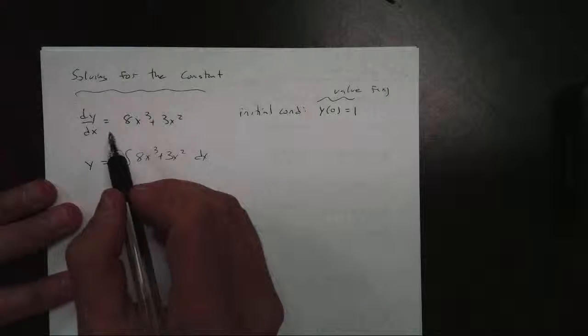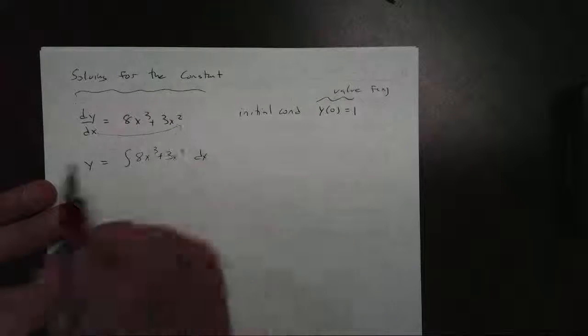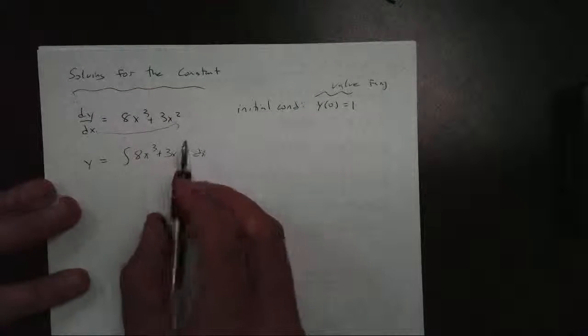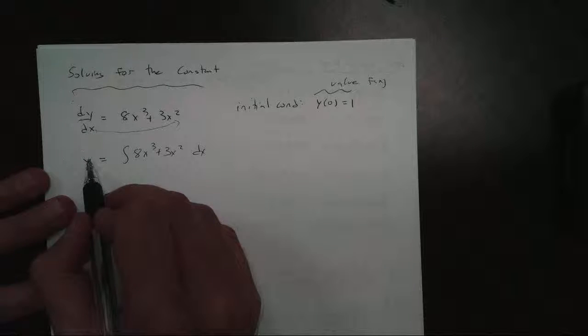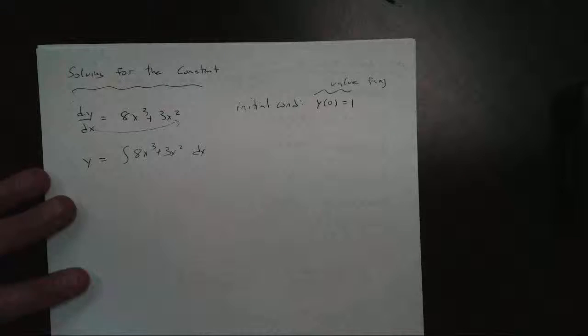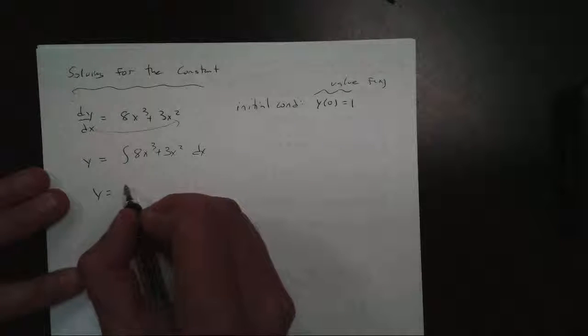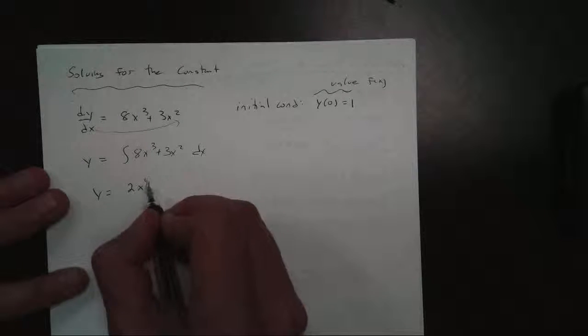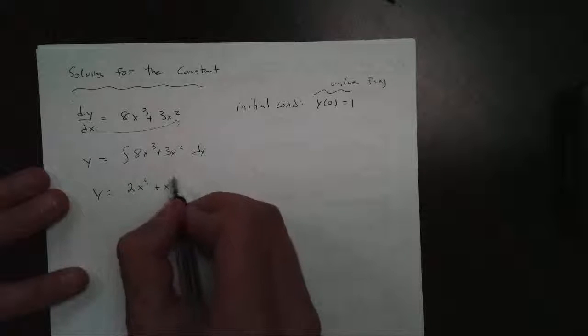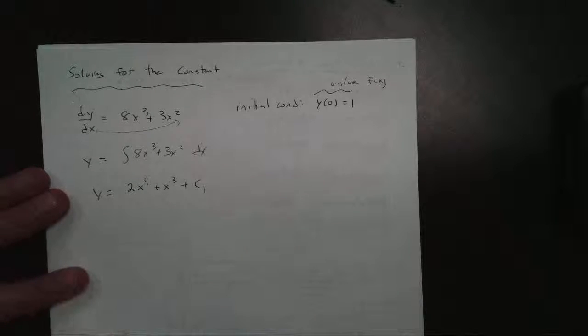Now don't forget the dx. Remember, where does that dx come from? I'm multiplying it across. The dy, I know that's going to become just y. We'll talk more about that later on this year. When I take the antiderivative, just like we have been doing, we get 2x to the 4th plus x cubed plus some constant.